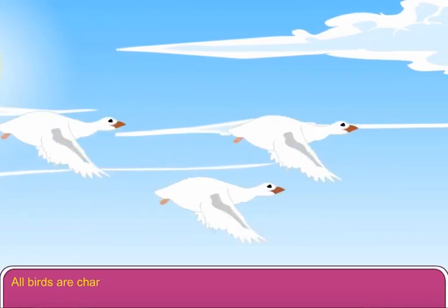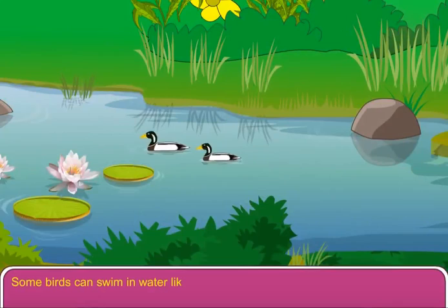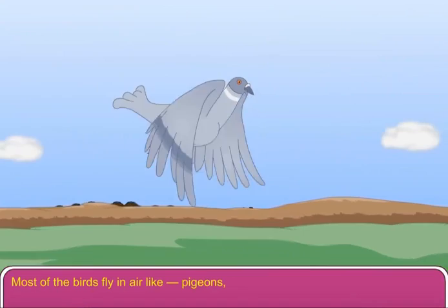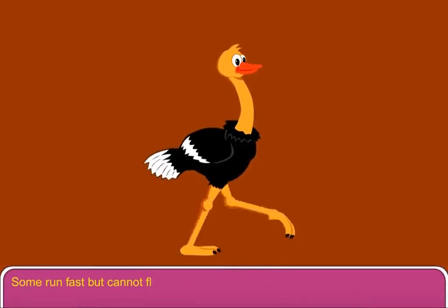All birds are characterized by feathers on their body. Some birds can swim in water like ducks. Most of the birds fly in air like pigeons, parrots, sparrows, and eagles. Some run fast but cannot fly, like the ostrich.